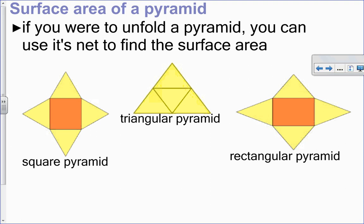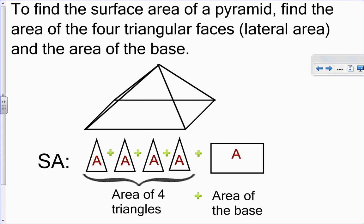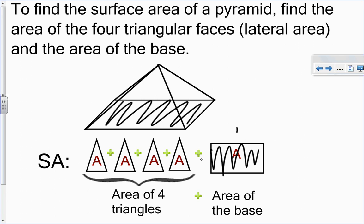Pyramids are named by their bases. If I were to actually unfold a pyramid, I would have these nets — the triangle faces and then the base in the middle. This one here is a square pyramid because the base is a square. This is a triangular pyramid because the base is a triangle. This is a rectangular pyramid because the base is a rectangle, and notice there are triangles going all around it. To find the surface area of a pyramid, I think about that net and just find the area of each of the faces.